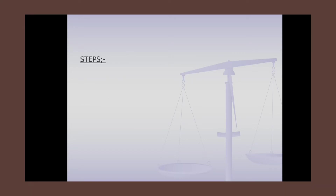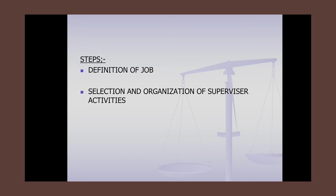The steps in supervision begin with definition of the job: giving proper guidelines to subordinates about what type of job they have to perform. Next is selection and organization of supervisor activities — clear-cut policies, procedures, and protocols covering how to supervise, when to supervise, to whom, and what methods to use.